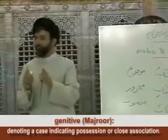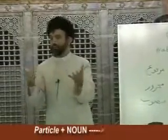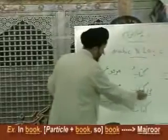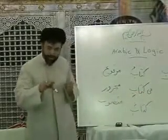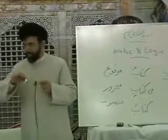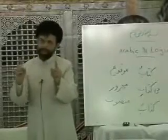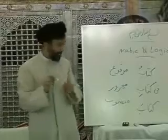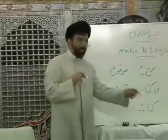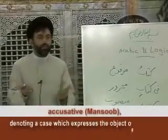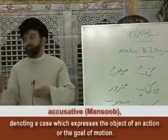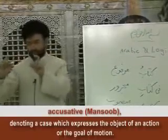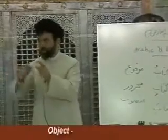What about majroor? Majroor: when a noun comes after a particle — comes after a harf — it becomes majroor. For example, 'fi kitabi' — whatever comes after a harf or particle becomes majroor. What about mansoob or nasb? When does a word become mansoob? Mansoob is the position of the object — when something is mafool. When a noun in a sentence becomes mafool or object, it becomes mansoob.